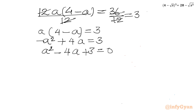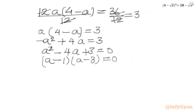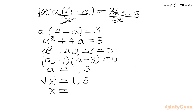This is the same quadratic equation as before. Using factorization we get (a - 1)(a - 3) = 0, so a = 1 or a = 3. Since a = √x, squaring gives x = 1 and x = 9. We'll cross-check at the end.